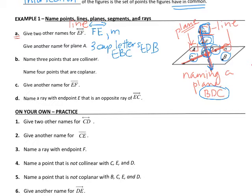Part B says name three points that are collinear. Do you see the word 'line' in collinear? That just means all of the points are going to lie on the same line. Looking at the diagram, point C, point E, and point D all lie on line N. So these are collinear points — they all have to be on the same line.